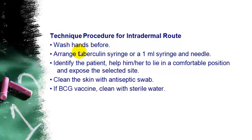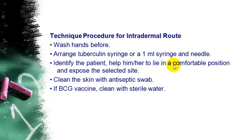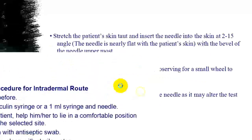Technique and procedure for intradermal route: wash hands before the procedure. Arrange the tuberculin syringe and needle — use a single-use syringe. Identify the patient, help them to lie in a comfortable position, and expose the selected site. Clean the skin with an antiseptic swab. If giving a vaccine such as BCG, clean with sterile water instead.